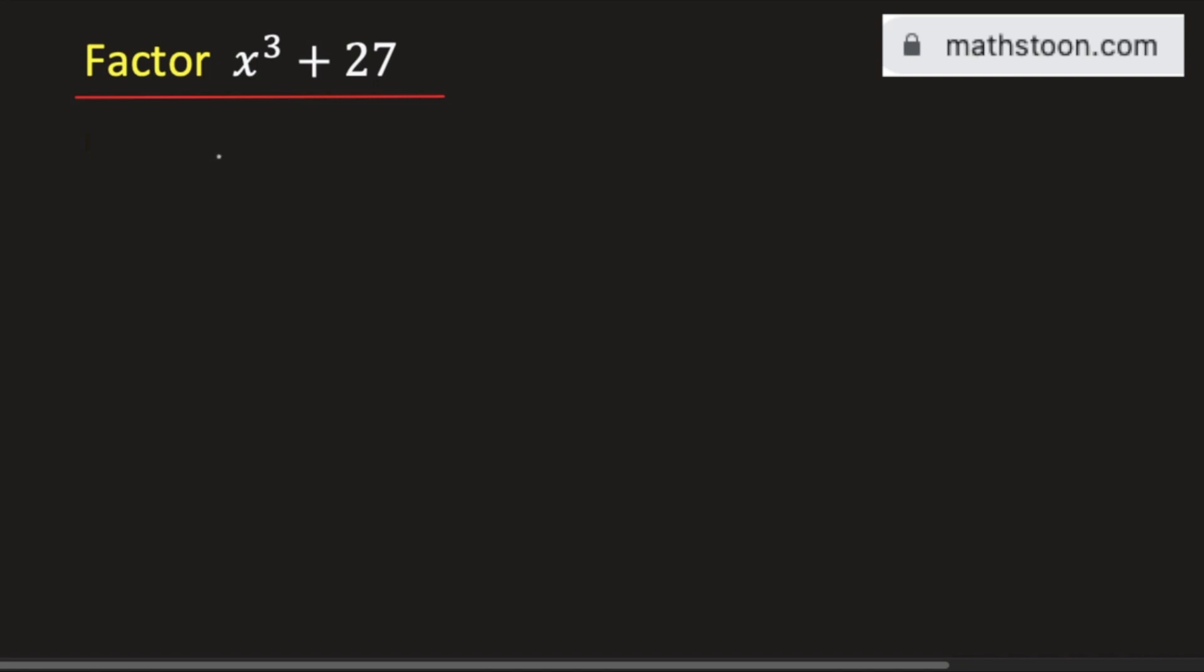In this video we will factorize the expression x cube plus 27. We know that 27 can be written as 3 cube. So if you substitute this we will get x cube plus 3 cube.